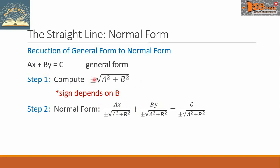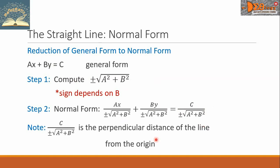Plus By, divided by the same value computed from step 1, equals C divided by that value. Take note that the right-hand side value is the perpendicular distance of the line from the origin.